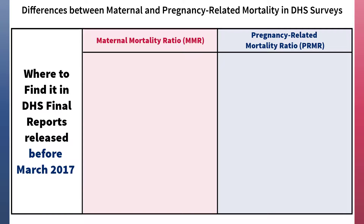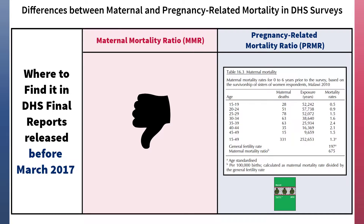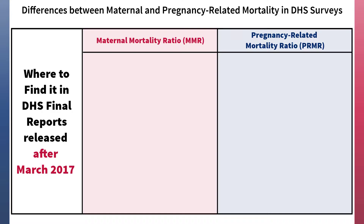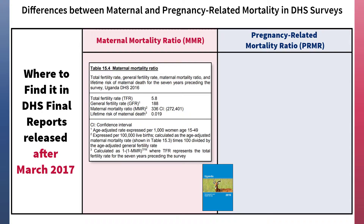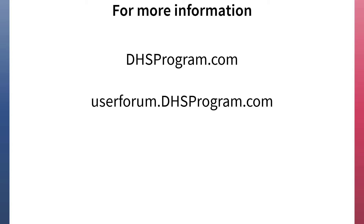The revised MMR calculation is not available in DHS final reports released before March 2017. In contrast, PRMR can be found in the Adult and Maternal Mortality chapter in the table titled Maternal Mortality. However, in reports released before March 2017, PRMR was referred to as maternal mortality, though the indicator measured DHS's definition of pregnancy-related mortality. In most DHS final reports released after March 2017, you can find MMR in the Adult and Maternal Mortality Chapter in a table titled Maternal Mortality Ratio. The chapter also includes a figure on trends in PRMR, and tables on PRMR can be found in the Appendices on Estimates of Sampling Errors and Data Quality Tables. For more information, visit our website, the user forum, or watch our additional videos on these indicators.